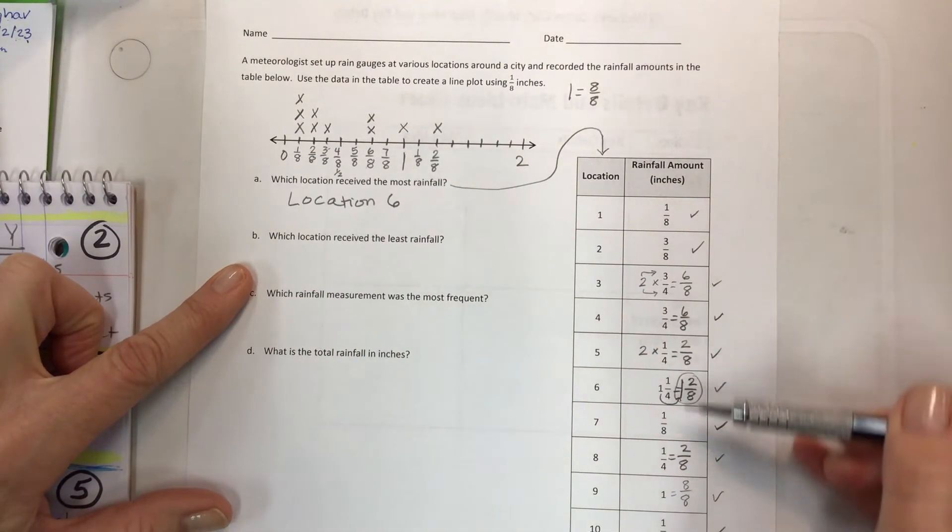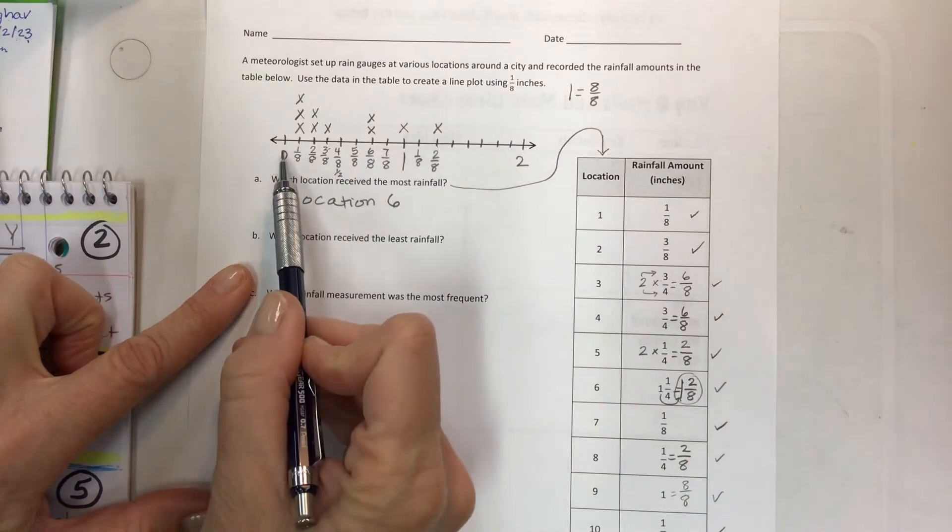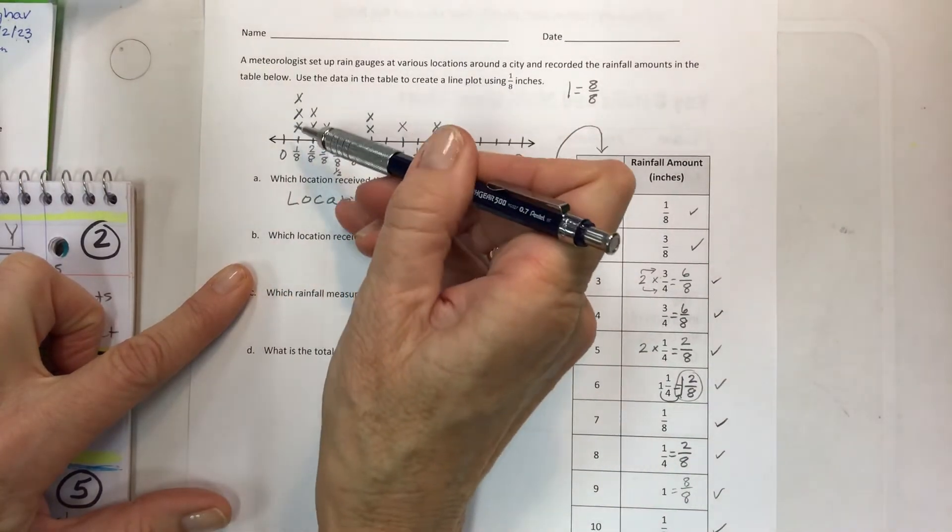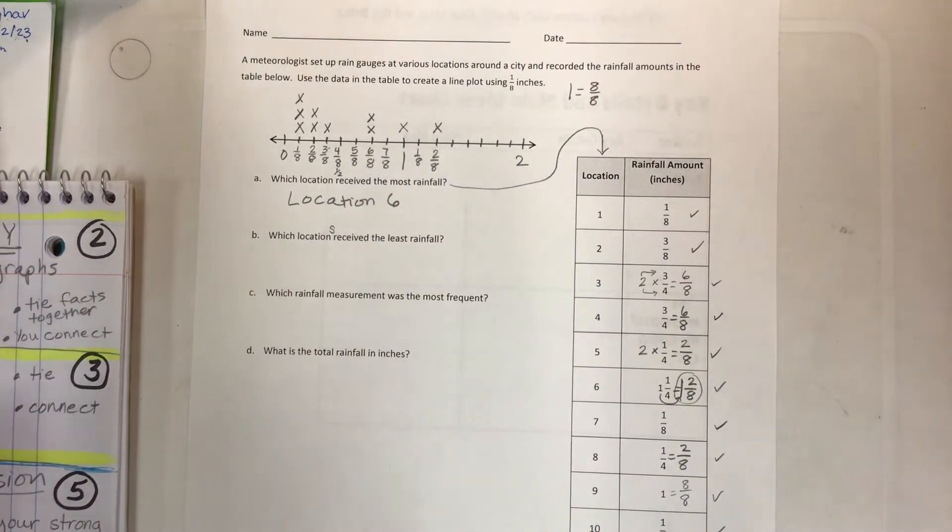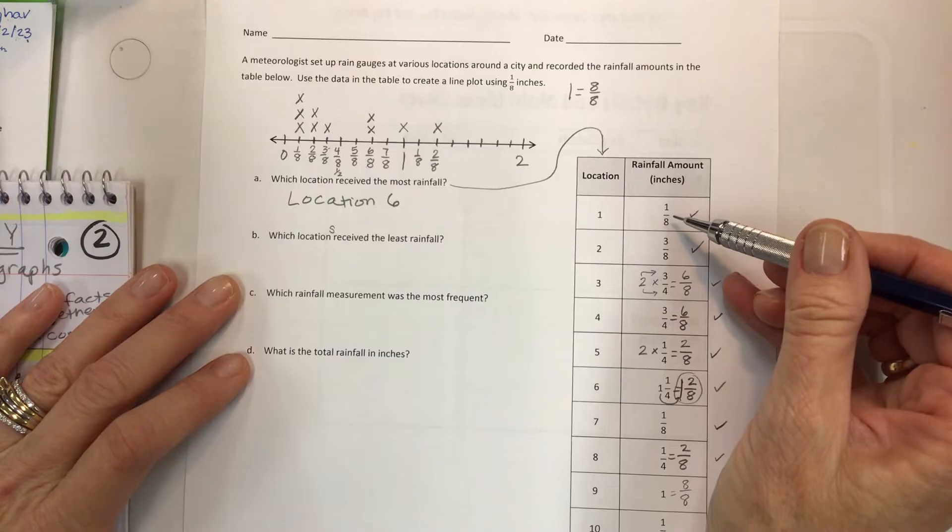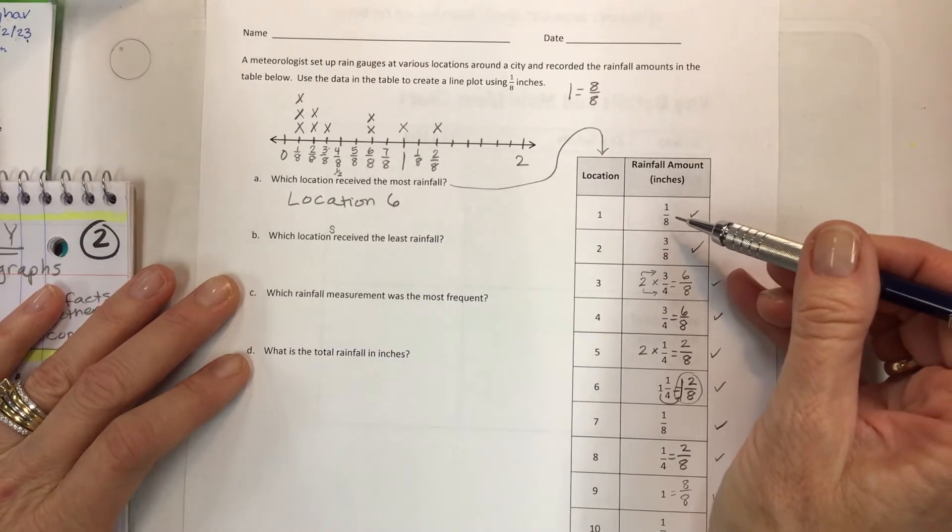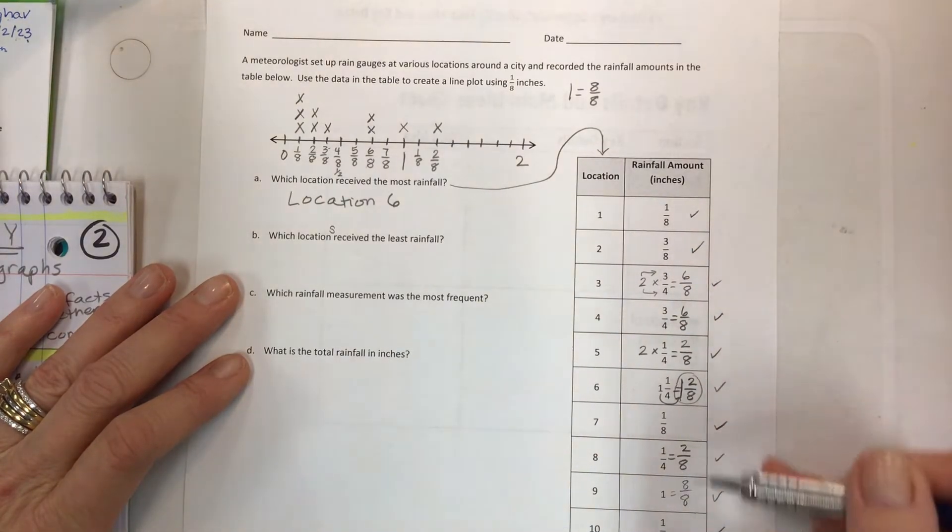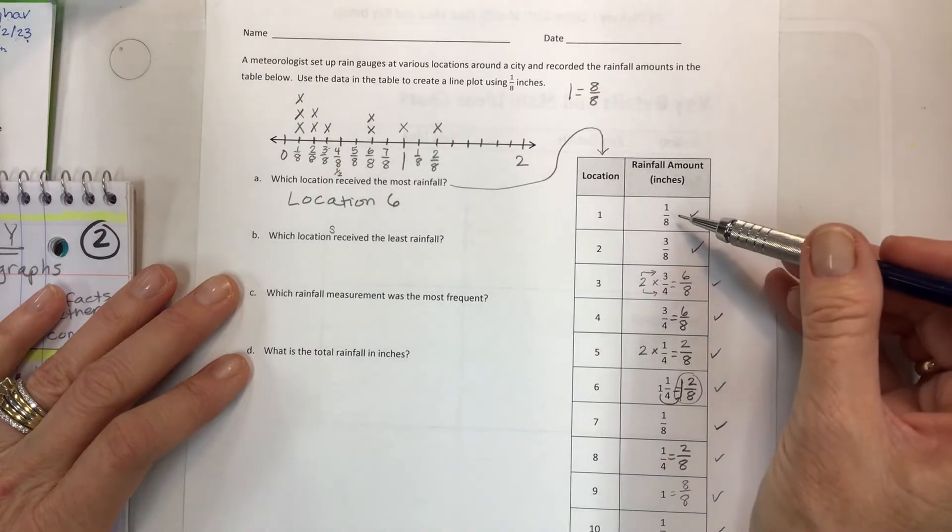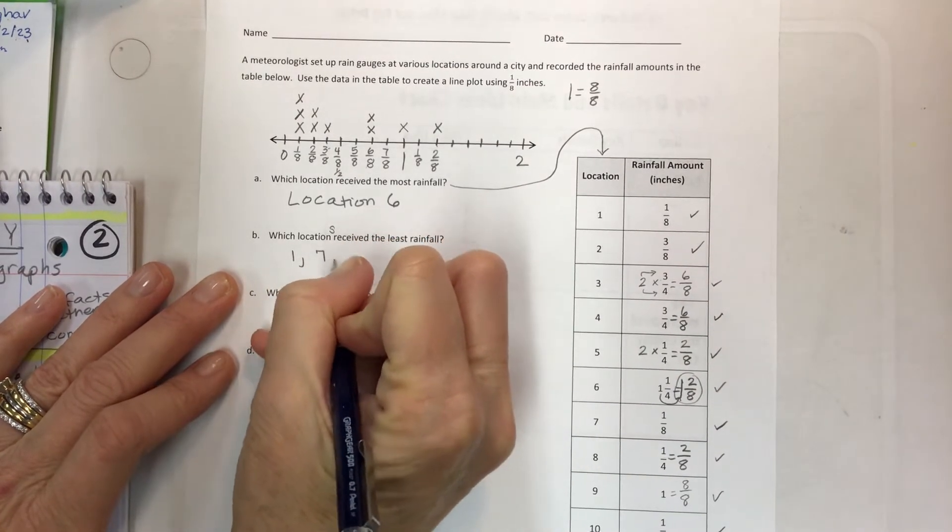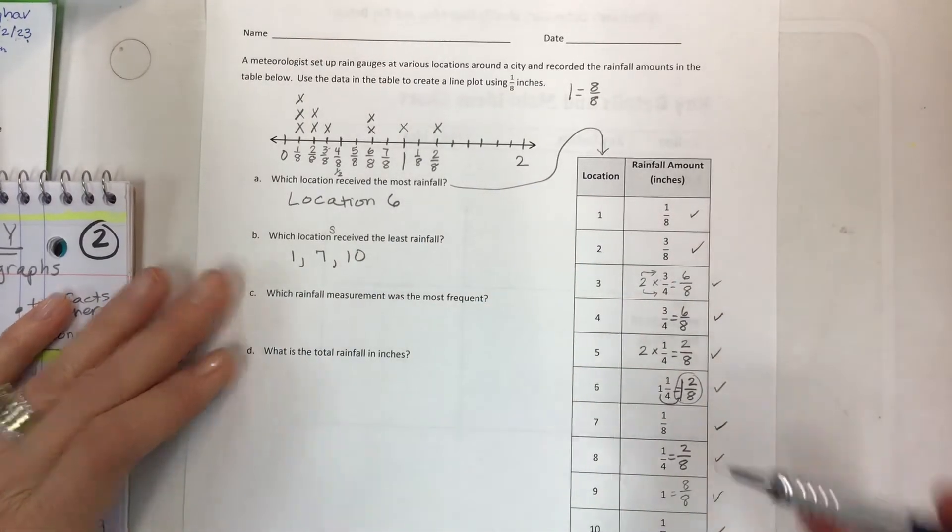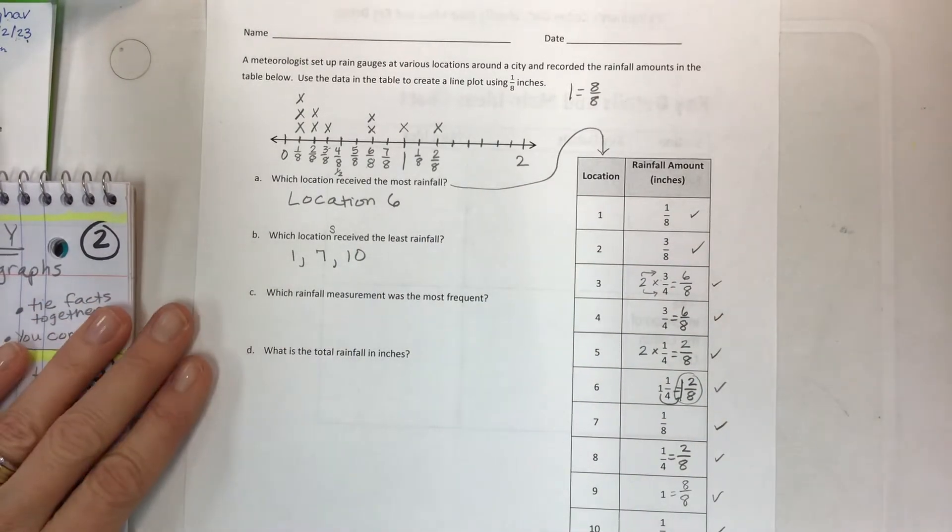Well, nothing has zero. So above zero, we have three locations. So they should really say location or locations in order to be accurate, but we're going to go with all of the places where one-eighth was measured. And there are three of them, so it's going to be location one, seven, and ten. And those three all received the same amount, which was the least.